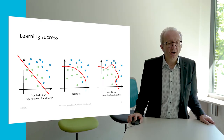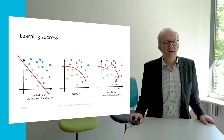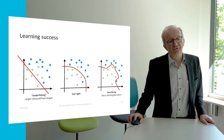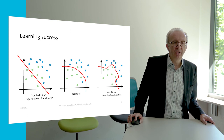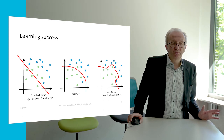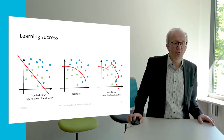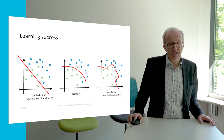You repeat this procedure until you assume that the minimum is reached. The learning success is not guaranteed — basically there are three situations. First, there is so-called underfitting: we have not learned enough. The goal was to separate the green from the blue dots, but this line does not work very well.